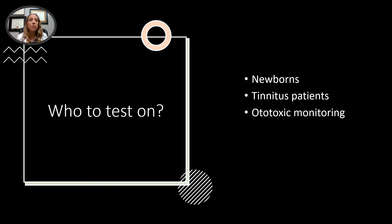Tinnitus patients — a lot of times tinnitus patients will have a normal hearing audiogram or hearing test, but the cells are actually a little bit more damaged than usual. And then ototoxic monitoring: there are some drugs, especially during chemotherapy, that can attack the ear. So even if there's normal hearing on an audiogram, this test can tell how strong or weak the cells are in the ear.